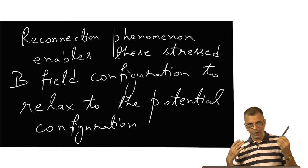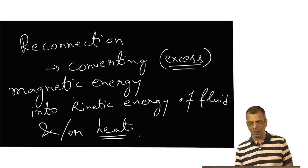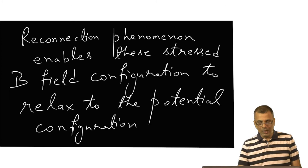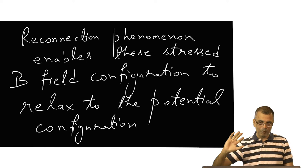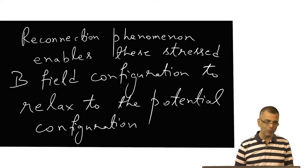It is converted into accelerating the bulk fluid and or heating the fluid — heating the plasma. This is a way of explaining the plasma heating. Reconnection is invoked not exactly as an energy source, but as a via media for the energy source. The ultimate energy source is the magnetic field configuration, but you extract energy from it via this process called reconnection.